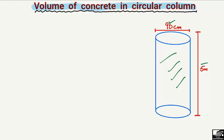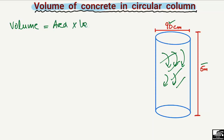To find out how much quantity of concrete can be there in this column, we have to find out the volume. We know that volume is equal to the area of the object multiplied by the height of the object. To find out the volume of any object, we multiply the area by the height.